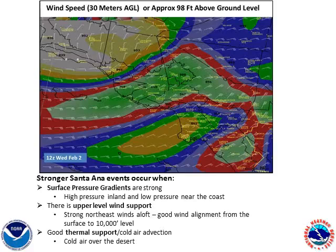And finally, we need good thermal support. When there's cold air over the desert, for example with a very cold low pressure system moving east of the area, this helps to accelerate the offshore winds.